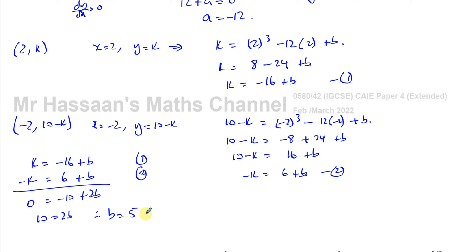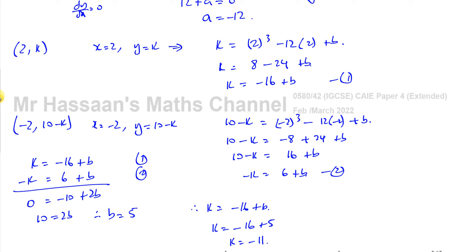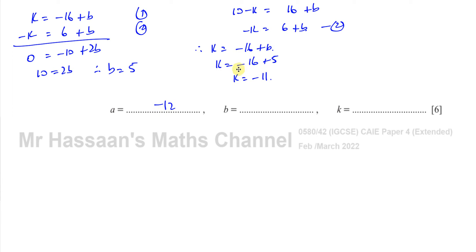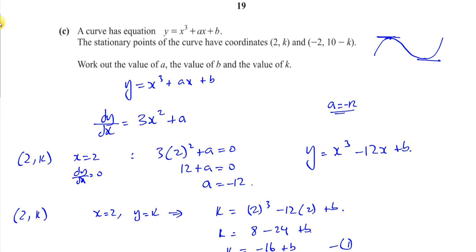Now that b equals 5, I can find k. Substituting back: k equals negative 16 plus 5, so k equals negative 11. So the final answers are: a equals negative 12, b equals 5, and k equals negative 11. That's the answer to part C.